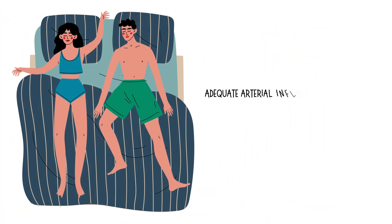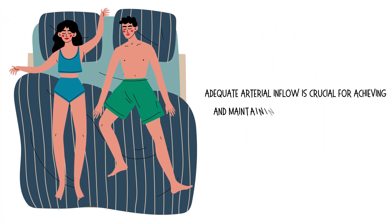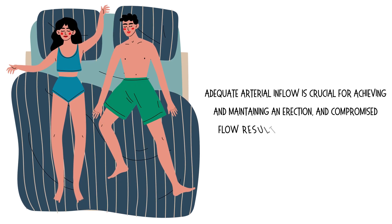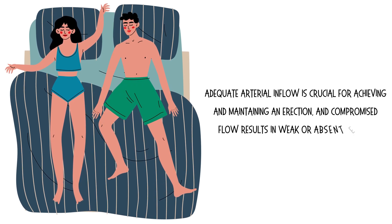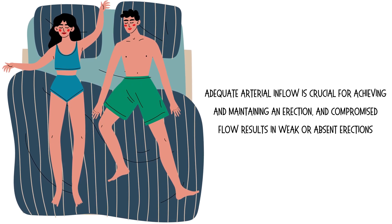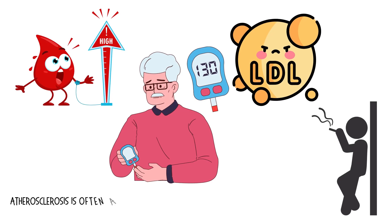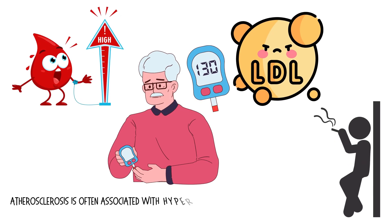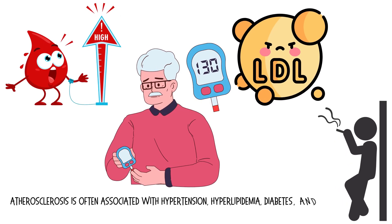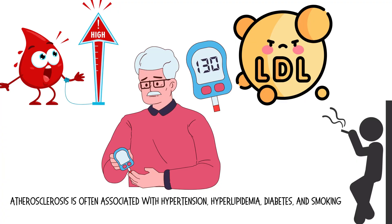Adequate arterial inflow is crucial for achieving and maintaining an erection, and compromised flow results in weak or absent erections. Atherosclerosis is often associated with hypertension, hyperlipidemia, diabetes, and smoking.